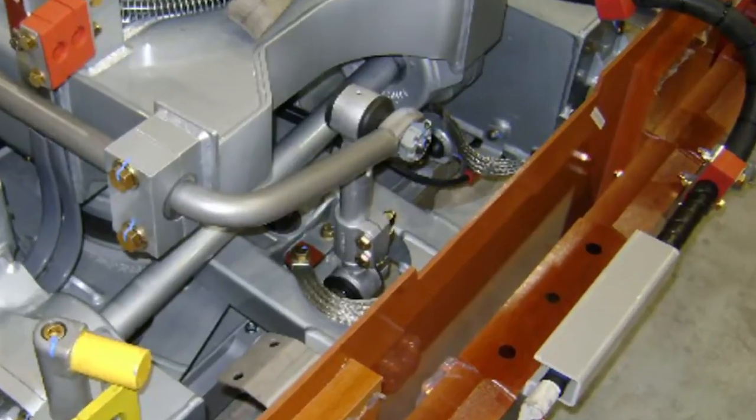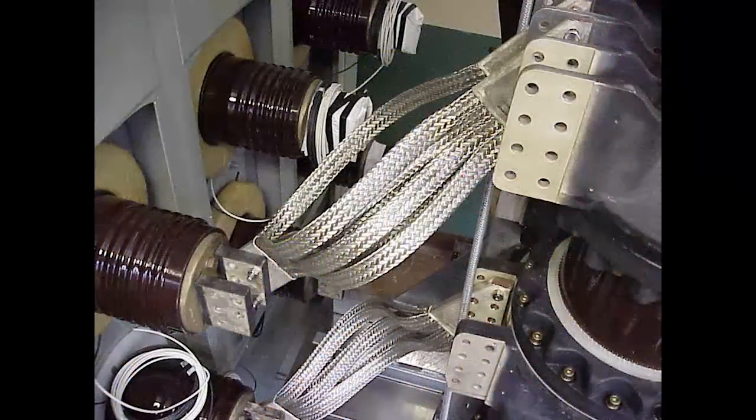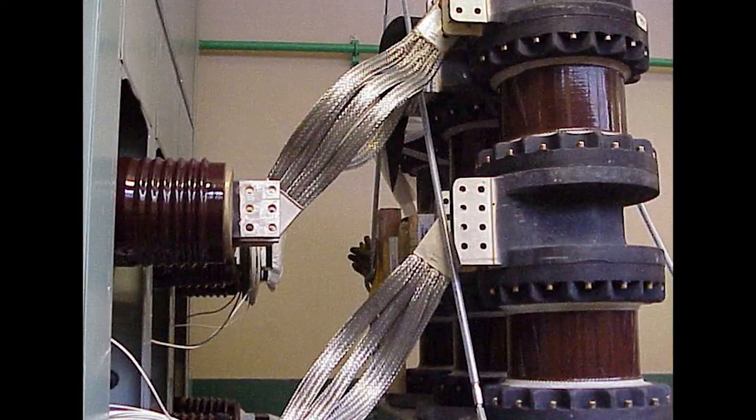In addition, braid absorbs shock and vibration of operating equipment by providing flexible, current-carrying loads between moving parts of heavy machinery and equipment.